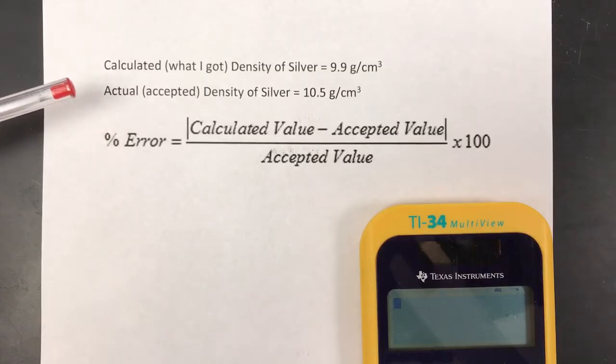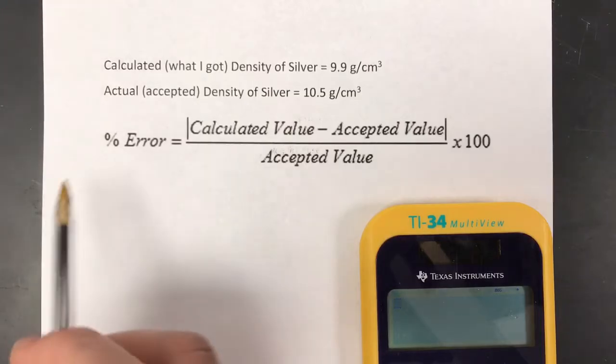What the percent error formula can do for you is give you a measurement of how wrong or how far off you are. It's literally the percent error, how far away from that actual answer you are. The formula works like this.